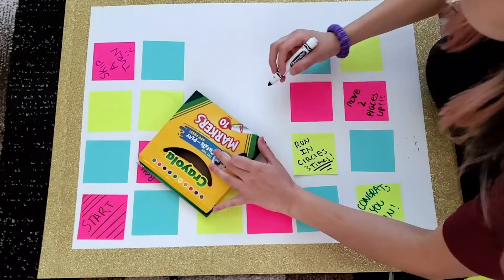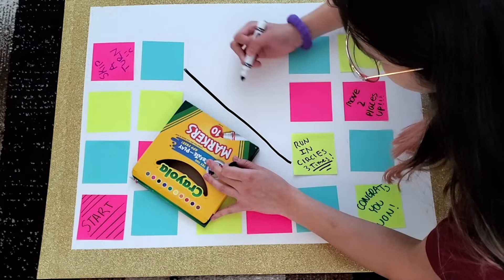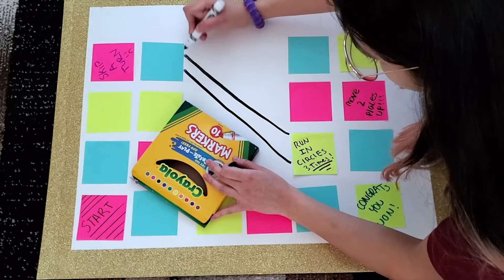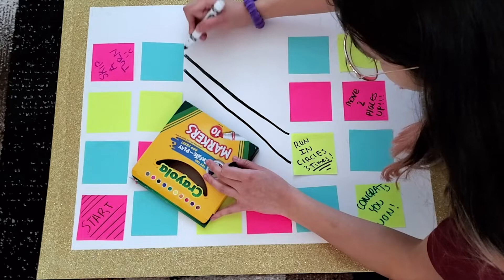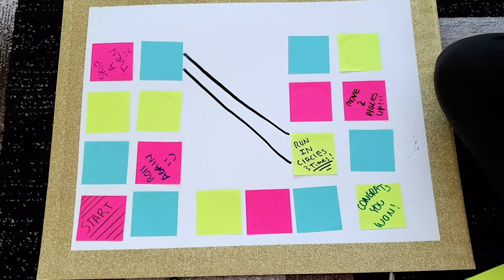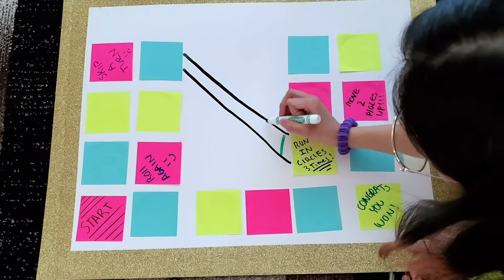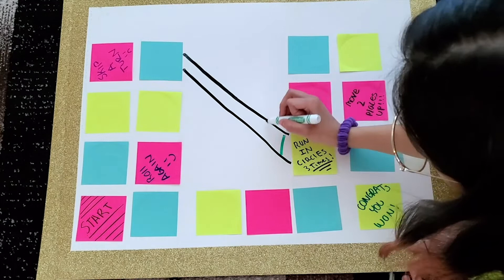So now that we get to go back and decorate and add some more rules and numbers to our game board, I'm actually going to add a little shortcut to our game board activity. So that way it makes the game a little bit more fun and interesting for the players. So if you do end up landing on the blue post-it note, you actually have the option to climb down the ladder onto the green post-it note where it says run in circles three times. So all you have to do is just perform that new rule, but at least you're much more closer to finishing the game and winning.